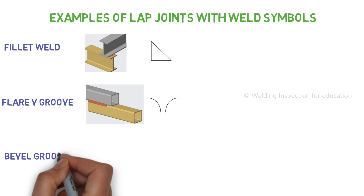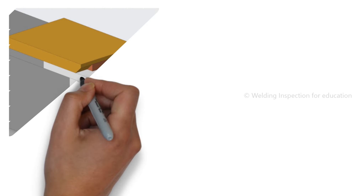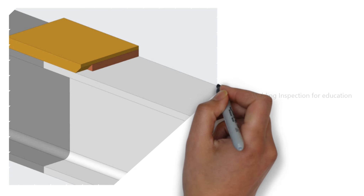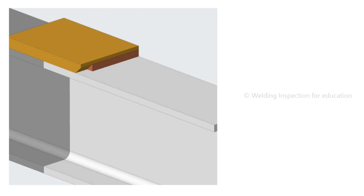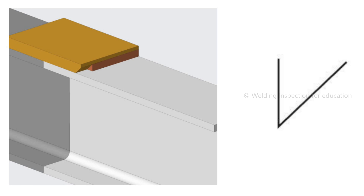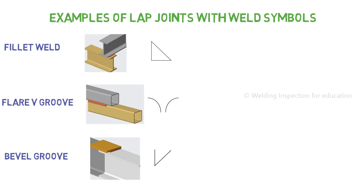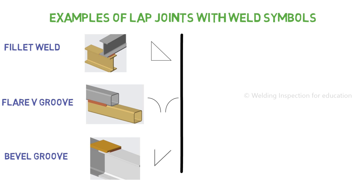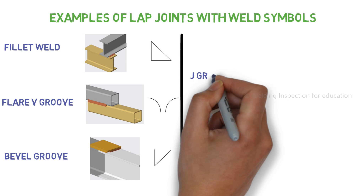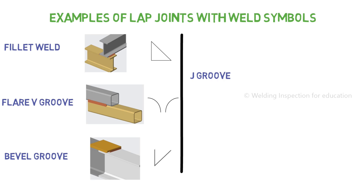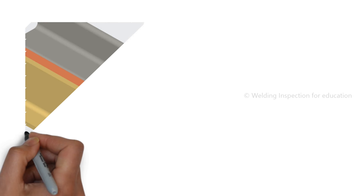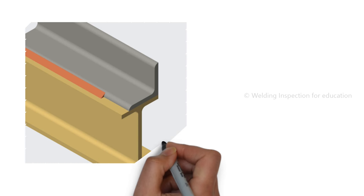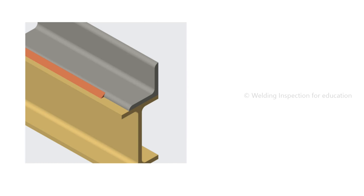Lap joint bevel groove: bevel groove means a weld between a flat surface and a chamfered surface — in other words, one surface is flat as-is and the other surface is prepared with some angle. Lap joint J groove: J groove means welding between a radius and a flat surface.